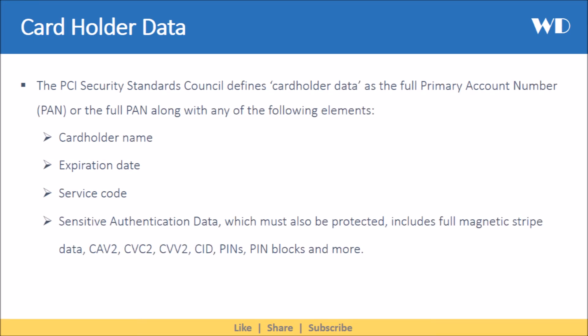Let's understand what we mean by cardholder data. The PCI Security Standards Council defines cardholder data as the full primary account number or the full PAN, along with any of the following elements: cardholder name, expiration date, service code. Sensitive authentication data, which must also be protected, includes full magnetic stripe data and more.